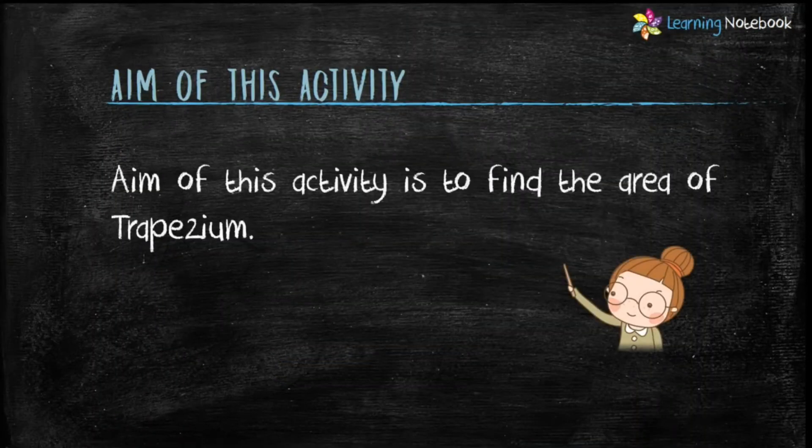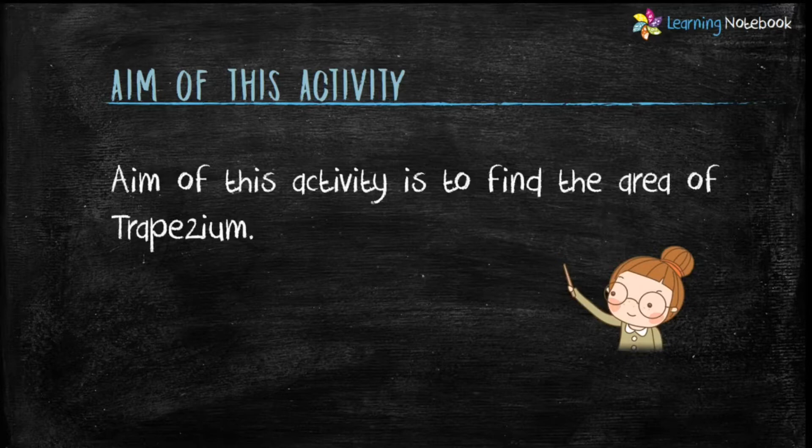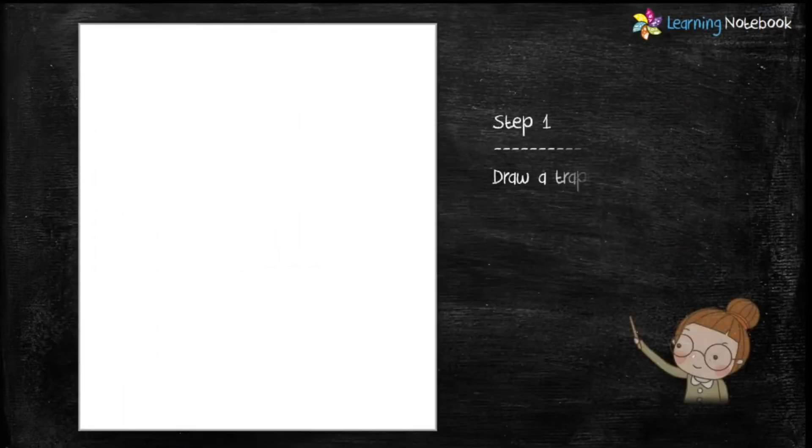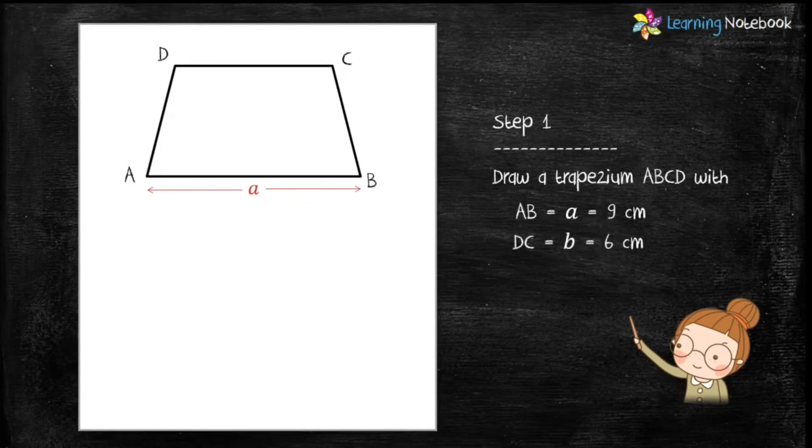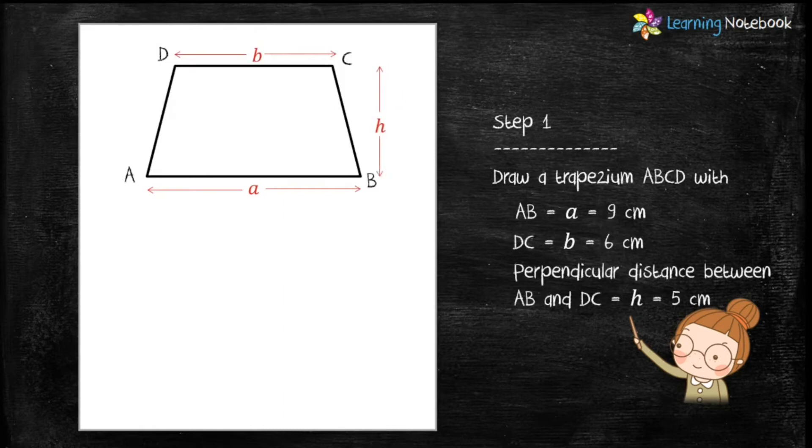The aim of this activity is to find the area of trapezium. Step 1: Draw trapezium ABCD with side AB = 9 cm, side DC = 6 cm, and the perpendicular distance between parallel sides AB and DC, or the height of the trapezium, equals 5 cm.